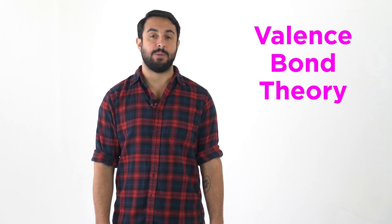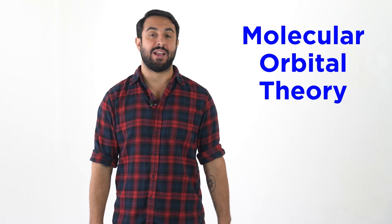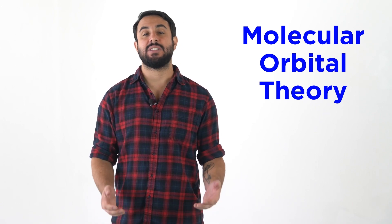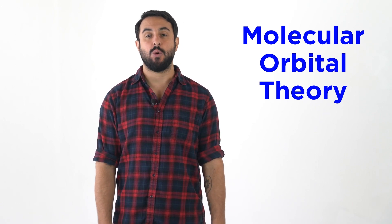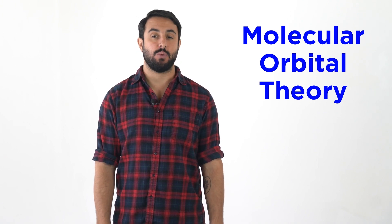Professor Dave and Chegg here. While valence bond theory is an important model for describing covalent bonding, we will sometimes want to use molecular orbital theory as well, as this is a very successful model for describing organic molecules. Let's go over some aspects of this theory that will be the most relevant to us.